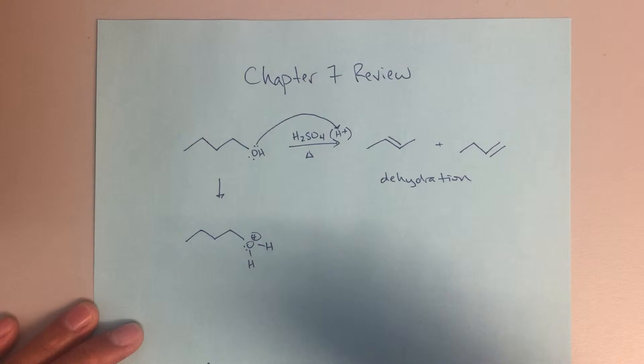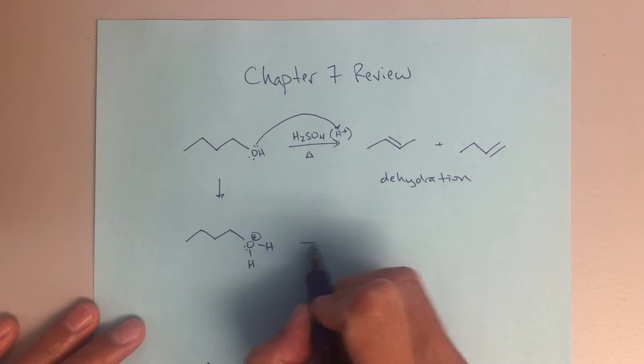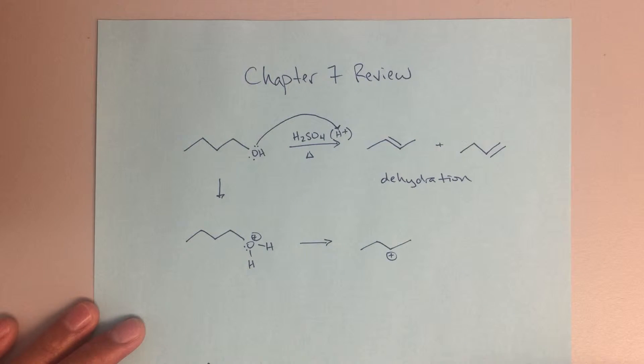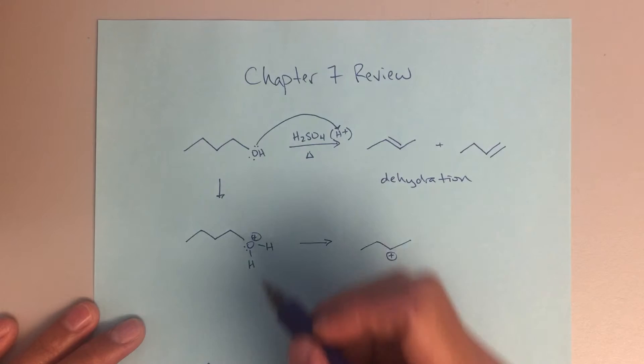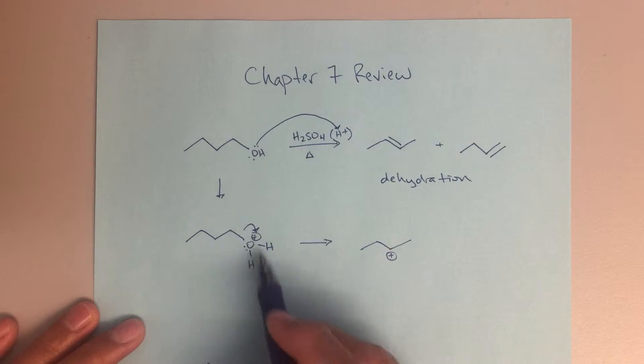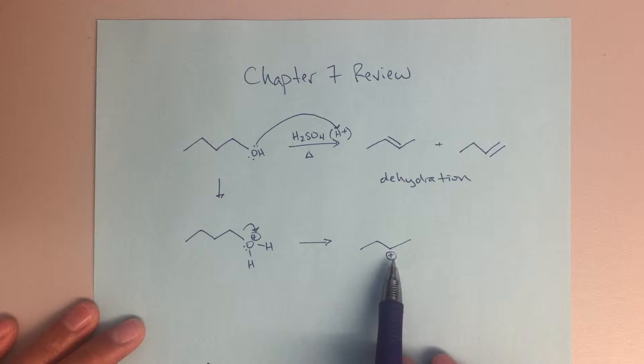Now the next step, there's a number of ways to sort of show this. Essentially what we're going to end up with is this carbocation, and there are really two ways to show this. The first way would be just to show elimination of this water molecule, we're just going to eliminate that water molecule, that's going to give us a carbocation at this position here, the one position, and then we're going to get a hydride shift to get to this carbocation.